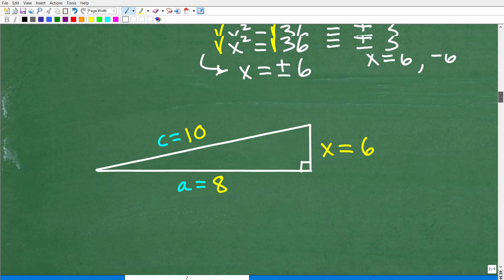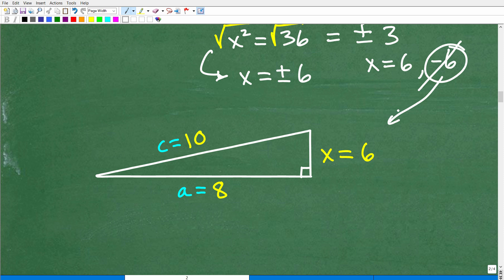So x = 6 and negative 6. But we are talking about distance here. So that negative 6 isn't going to work for us. So we'll throw out that negative distance. So the answer is 6. And that's basically it.